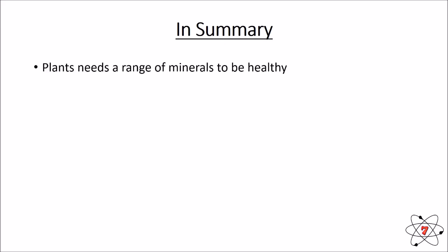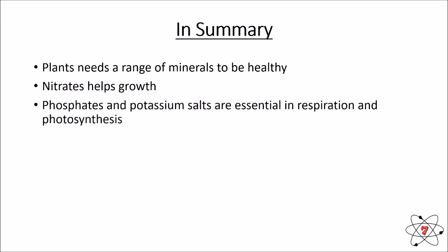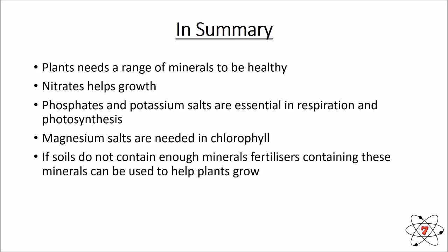In summary, plants need a range of minerals to become healthy. If a plant does not have enough of any mineral it is deficient and it is going to have some kind of health problem. Nitrates help plants grow because they're used to produce protein. Phosphates and potassium salts are essential in respiration and photosynthesis. Magnesium salts are needed to produce chlorophyll. If soil does not contain enough of any particular mineral, fertilizers containing these minerals can be added to the ground. I hope I've made science easy for you — keep on learning!